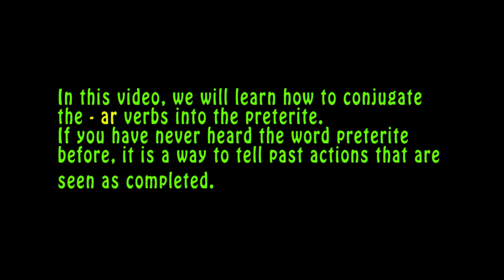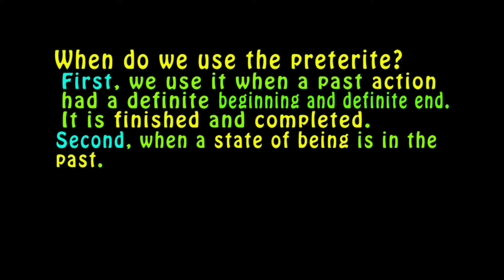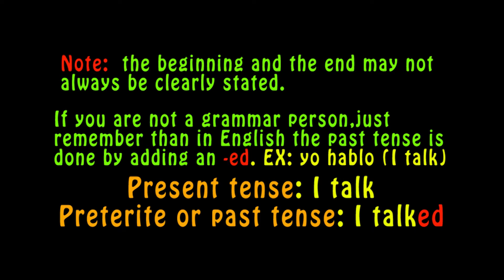In this video, we will learn how to conjugate the AR verbs into the preterite. If you have never heard the word preterite before, it is a way to tell past actions that are seen as completed. We use it when a past action had a definite beginning and definite end — if it is finished and completed. Second, when a state of being is in the past, if the action and state of being is viewed as completed, no matter how long it lasted or took to complete, the preterite will be used. Note: the beginning and the end might not always be clearly stated.